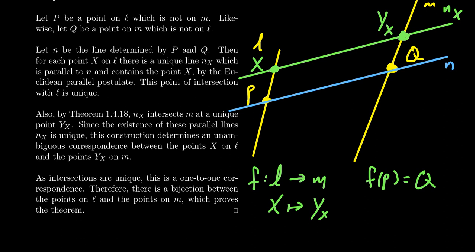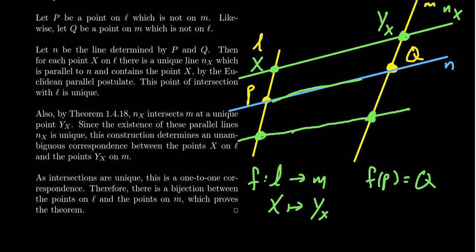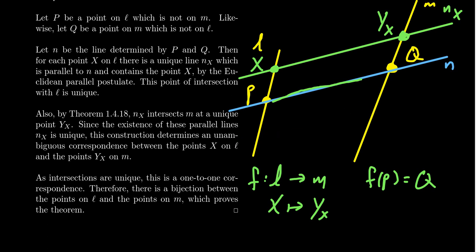It's also onto. How do I know it's onto? We can work the other way around: take the line n and take any point on M; by EPP there's a line parallel to n that contains that point; by Proclus Lemma that will intersect L somewhere; and then that point maps to our starting point. So this map is, in fact, bijective. You can also construct the inverse by working backwards — it has an inverse, which also proves it's a bijection.